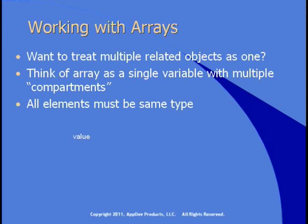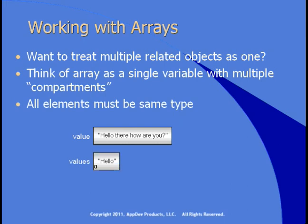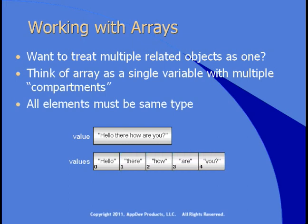Here's an example. Imagine you have a variable named value that contains a string: 'Hello there, how are you?' You might want to treat that as an entire sentence, or you might want to treat it as a group of individual words. You might want a numbered set of words where the zeroth word was hello, then there, how, are, you — each as individual portions of the entire object. Once we've broken it up into words this way, we can work with each individual word, or we can work with the entire collection of words as a string. And that's what an array lets you do.